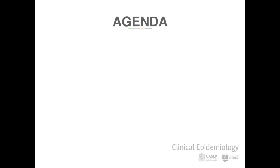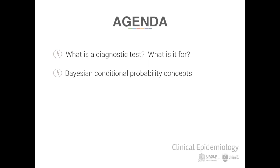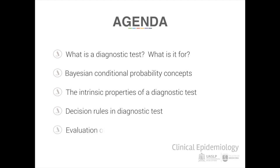This unit's agenda includes the coming five topics. What is a diagnostic test and what is it used for? Concepts about Bayesian conditional probability. The intrinsic properties of a diagnostic test. Decision rules in a diagnostic test. Evaluation of a diagnostic test.